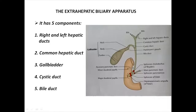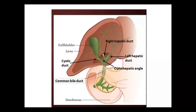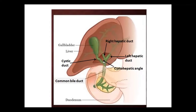The extrahepatic biliary apparatus has five components: the right and left hepatic ducts, the common hepatic duct, the gallbladder, cystic duct, and bile duct. The right and left hepatic ducts emerge from the liver lobes through the porta hepatis and unite at the right end of the porta hepatis to form the common hepatic duct, which descends about 2.5 centimeters before being joined by the cystic duct on the right to continue as the common bile duct. The angle between the cystic duct and the common hepatic duct is acute and is known as the hepatocystic angle.